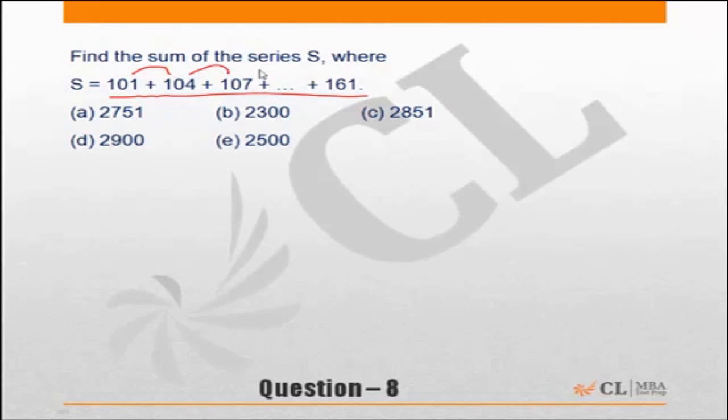Every term is increasing by 3. This is nothing but an arithmetic progression. In an arithmetic progression, the sum of n terms will be n by 2 into t1 plus tn, or there is also written as n by 2 into a plus l, where a is the first term and l is the last term.